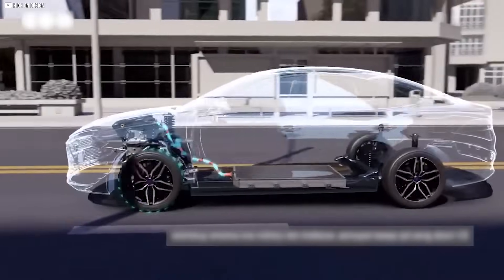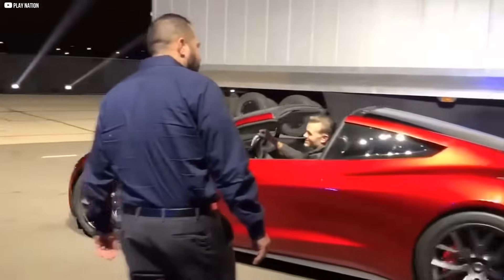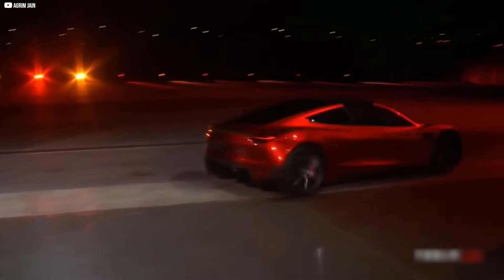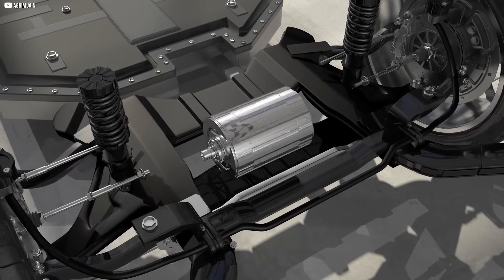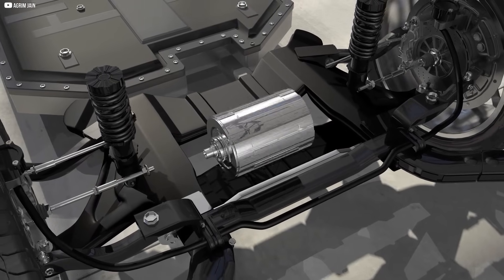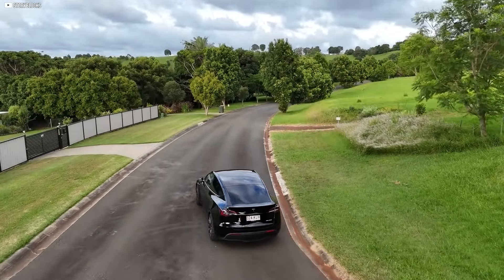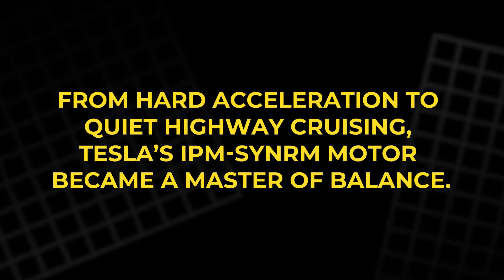The motor's controller constantly adjusted these angles in real time. It read driver inputs, vehicle speed, and torque demands, then calculated the perfect balance between magnetic and reluctance forces. The result? A motor that didn't just deliver power when needed, but knew exactly how to manage its internal physics for every driving condition. From hard acceleration to quiet highway cruising, Tesla's IPM SynRM motor became a master of balance.